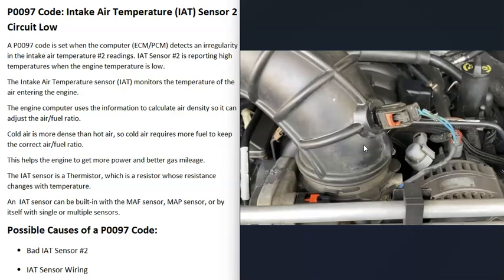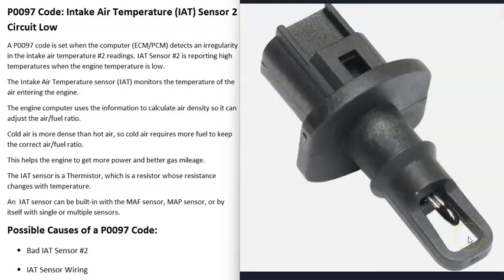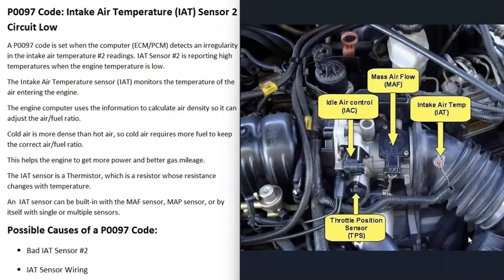The computer can make small adjustments to the air-fuel ratio mixture going into the cylinders, which will fine-tune the engine and keep it running well. But when you get a P0097 code, the computer is seeing some kind of issue with this sensor, mainly the Intake Air Temperature Sensor 2, and it's reporting bad information, so it's going to have to be troubleshot.